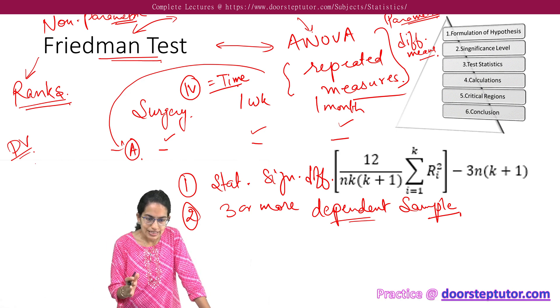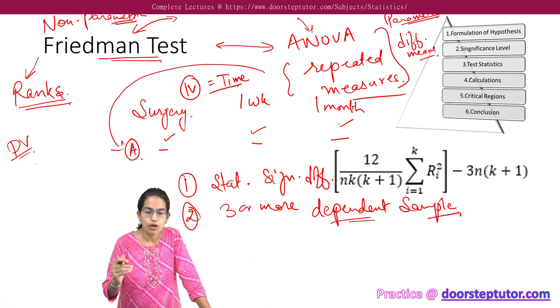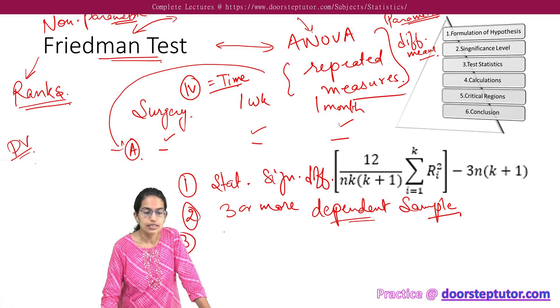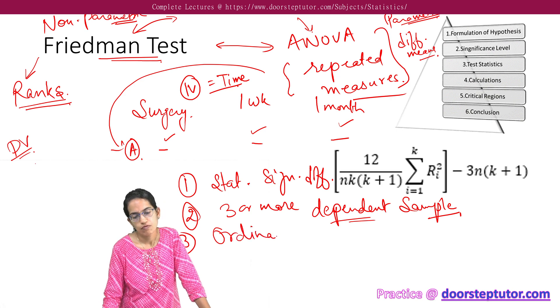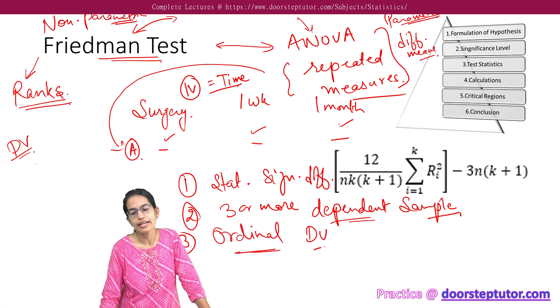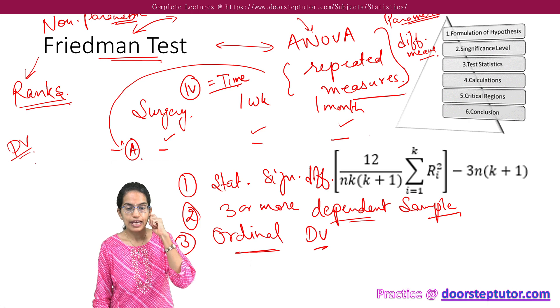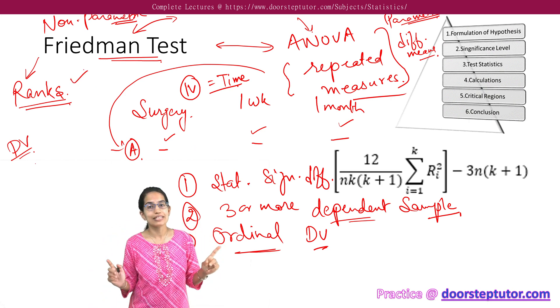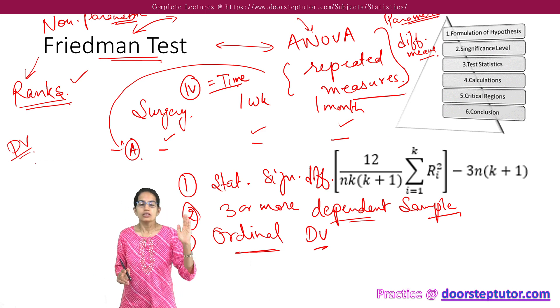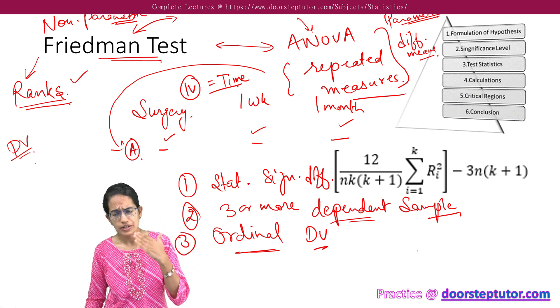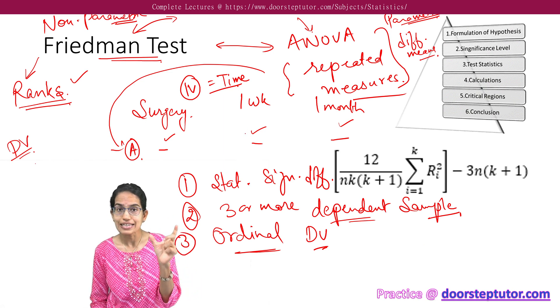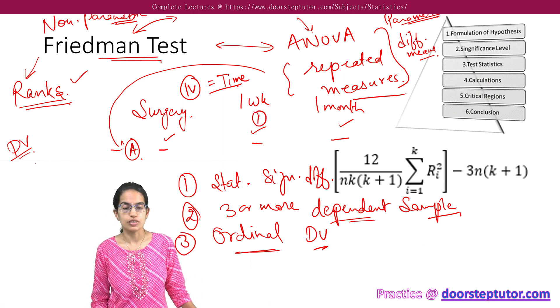Now, as I said, there can be three or more dependent samples. The other important thing is the ordinal value of the dependent variable. That means, when I am ranking, under Friedman test, as we said, what do we do? We understand the difference of the ranking. Here, the value with the highest number would be ranked first.